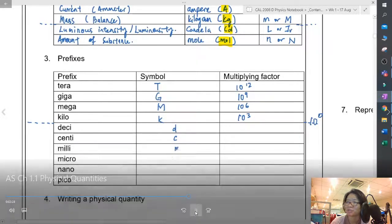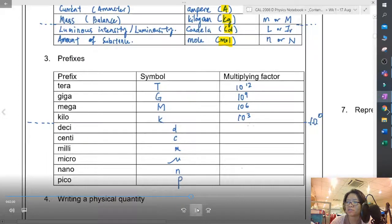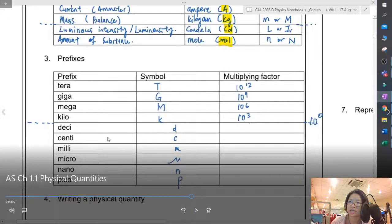You notice that all of these are lowercase: d, c, m. We've all followed the first letter, but micro cannot take m because milli already took m, so we use the symbol mu. Nano is n and pico is p.